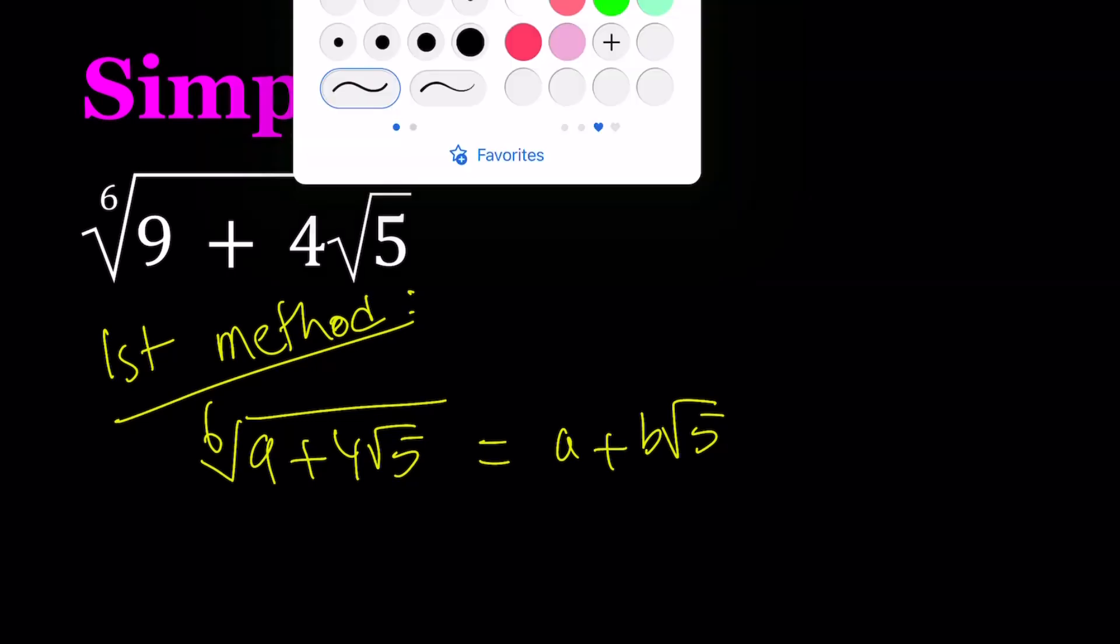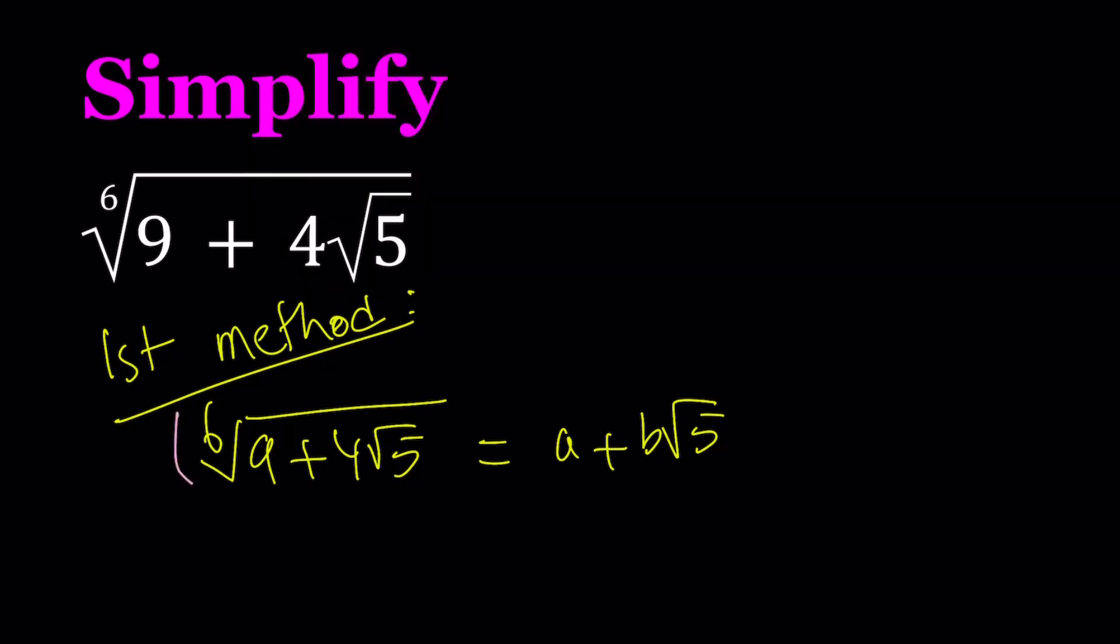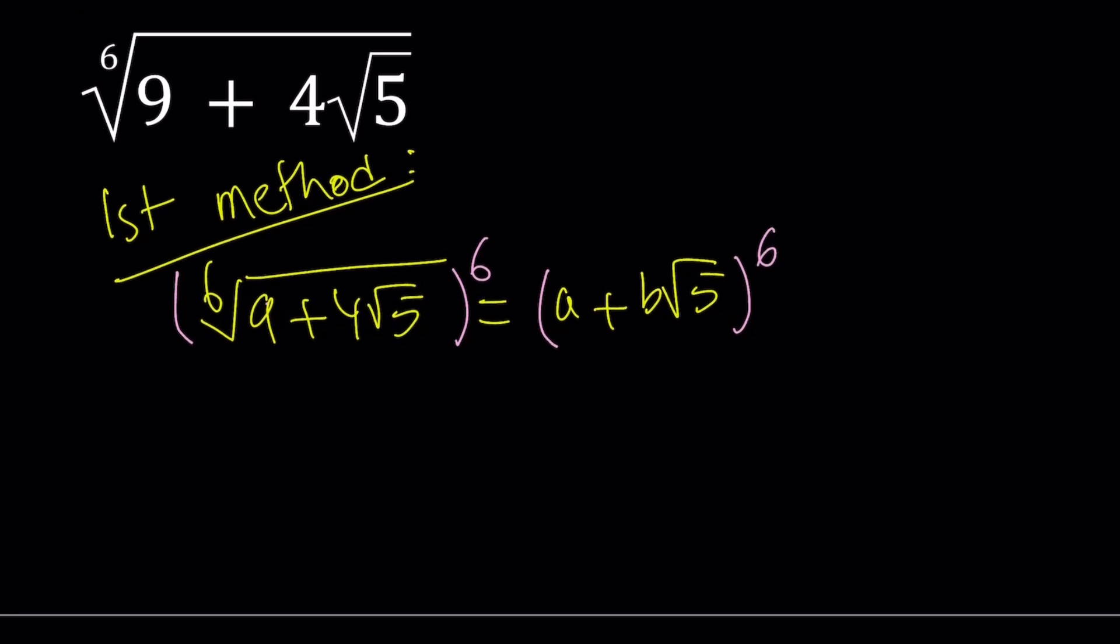Let's go ahead and take both sides to the sixth power. Obviously, in this case, you want a and b to be positive, because under the radical, we have two positive terms. When we take to the sixth power, a plus b root 5 to the sixth power becomes 9 plus 4 root 5. We're going to try to find the a and b values that satisfy this equation.